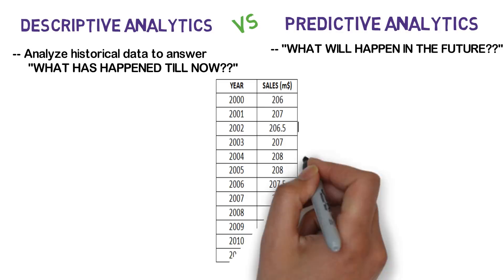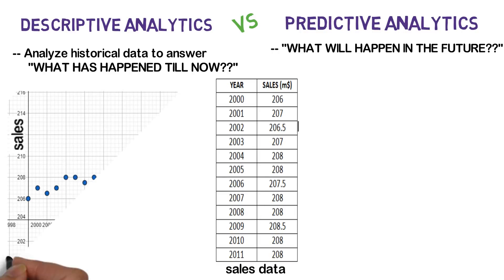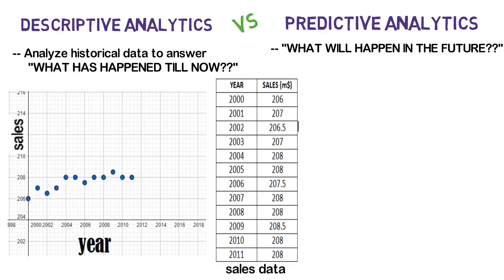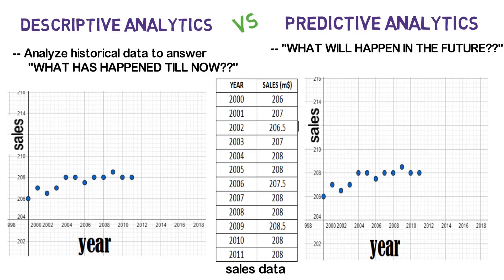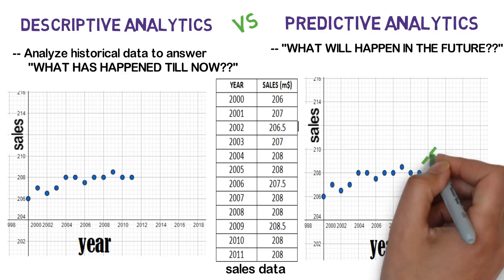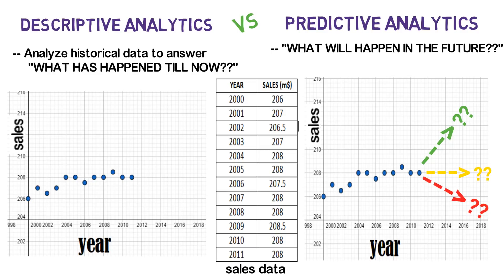Let's understand this with a simple example. I have sales data of XYZ company in a table format. As part of descriptive analytics, we can simply create a scatter chart so that we can quickly understand how the company has been performing in terms of sales in the previous years. Now for predictive analytics — can we predict what's going to happen to the sales in coming years? Will the sales increase, decrease, or remain the same? If we are able to answer these questions, it is called predictive analytics.